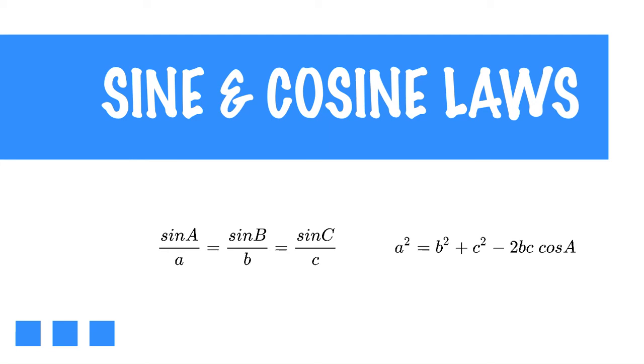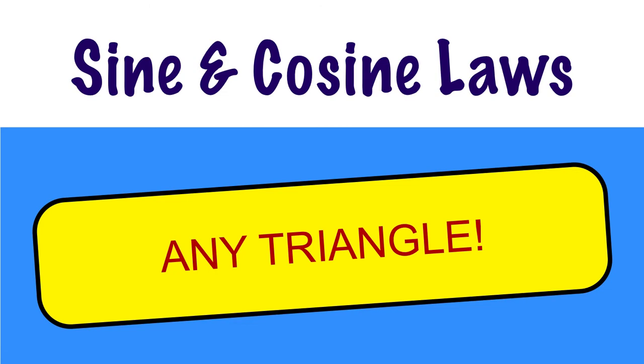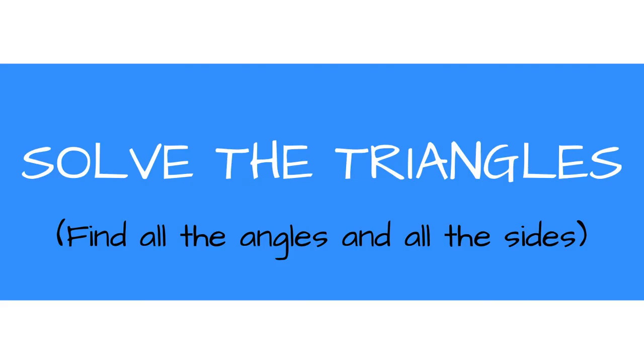The sine and cosine laws are two formulas based on sine and cosine. You can see that cosine is loosely attributed to the Pythagorean theorem. Now these can be used for any triangle at all. You're not limited to right triangles with these two laws. I'm going to give you a couple of examples of solving triangles, which means to find all the angles and all the sides, and we'll use the sine and cosine laws to do that.